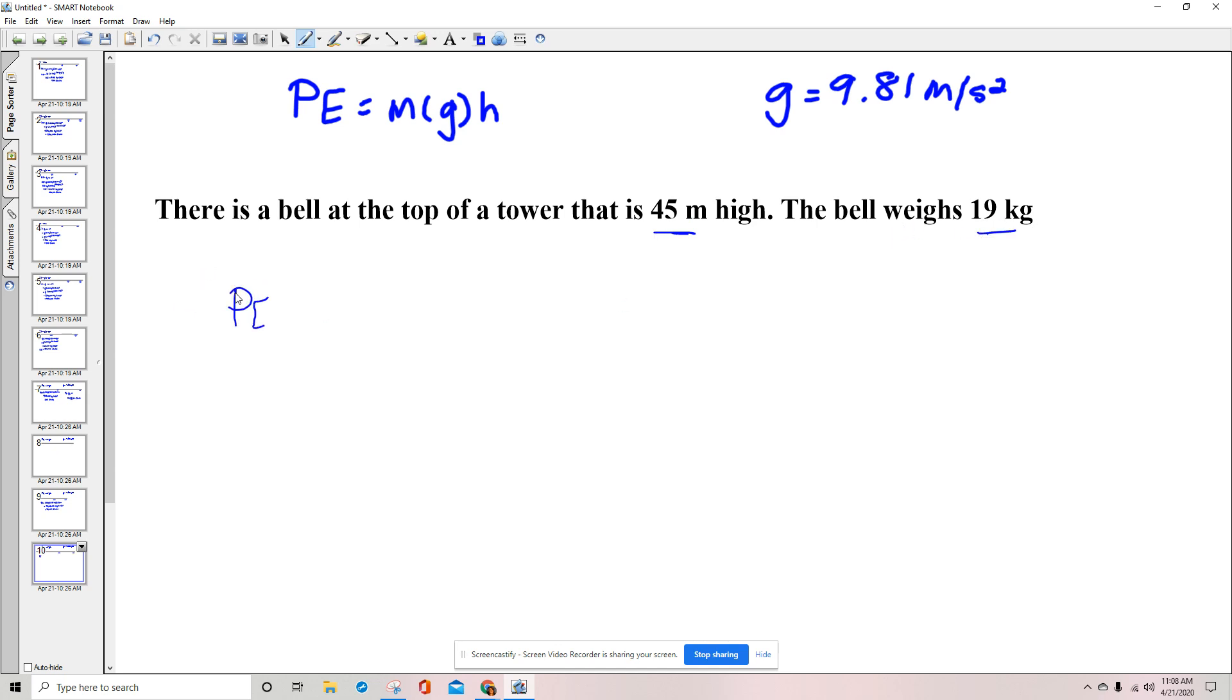So potential energy of this bell would be the mass, which is 19 kilograms, times the gravitational constant of 9.81 meters per second squared, times the height, which is 45 meters. So I'm going to say 19 times 9.81 times 45.